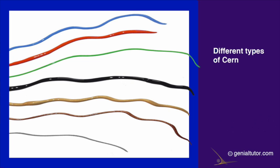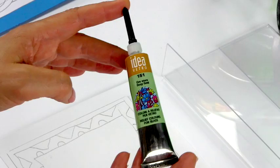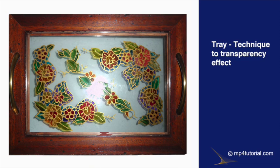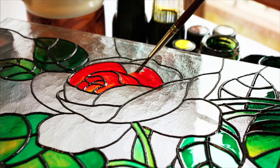How to choose the CERN? It depends on the colors of the internal composition. For example, if we have to paint white flowers, the color black will not be shown well because it is too heavy. Better in this case to use a light gold or silver CERN. If we paint a bouquet of red flowers, it will be better to use a black CERN because it will create a pleasant detachment and chromatic contrast.